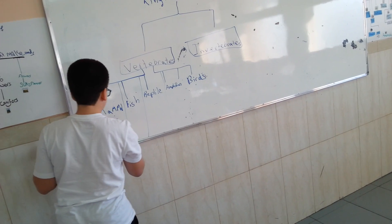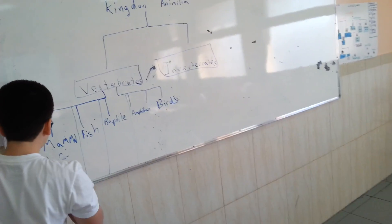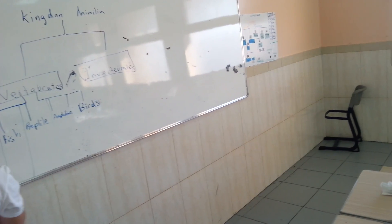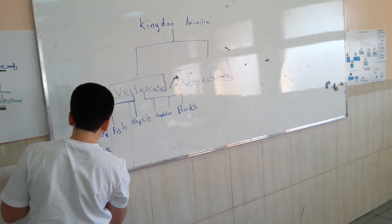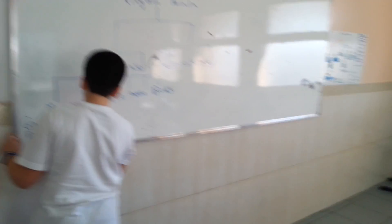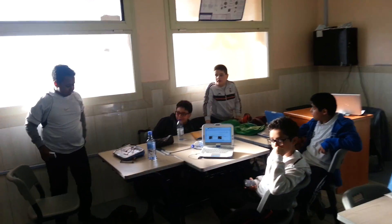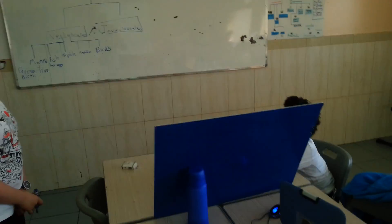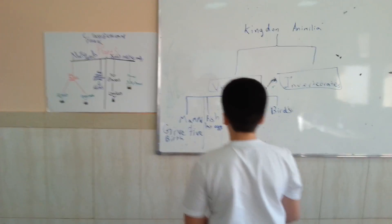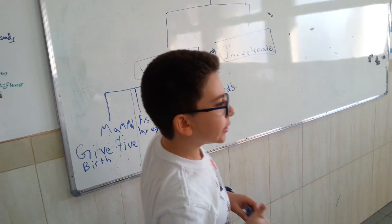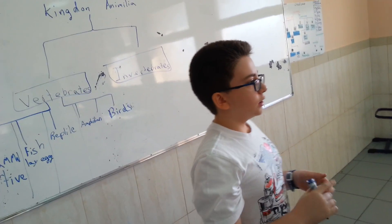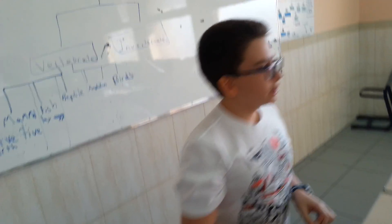Mammals give live birth. Mammals give live birth — they are warm-blooded, they feed their young milk, and they have fur.